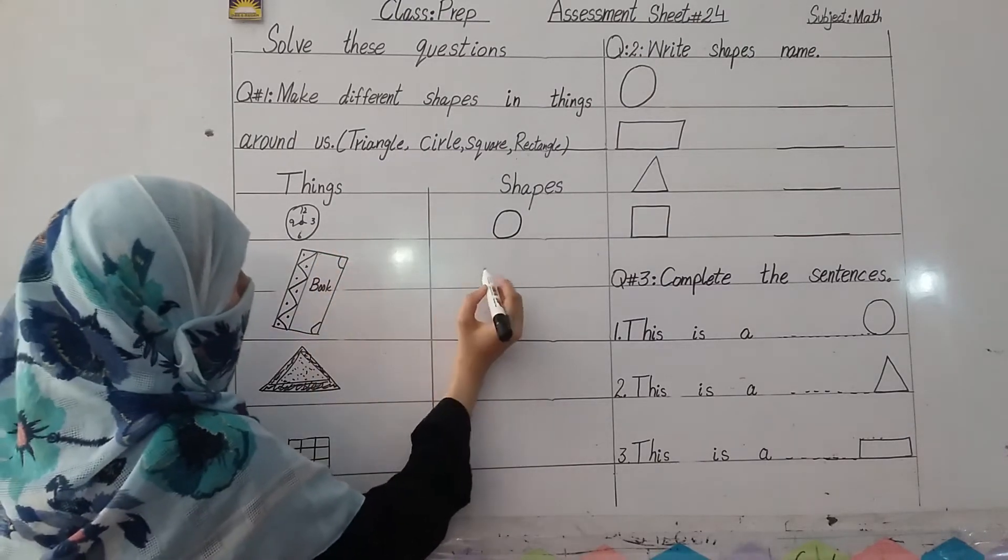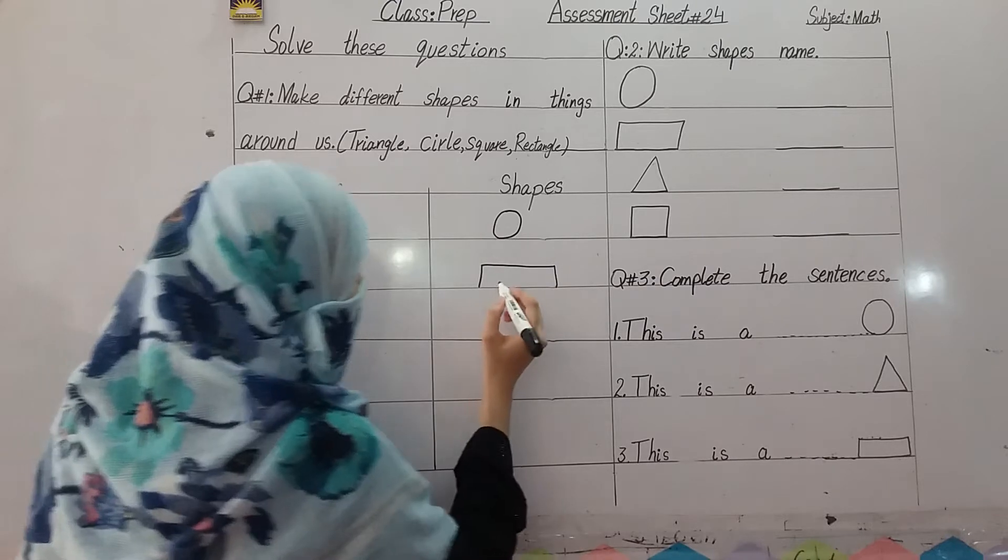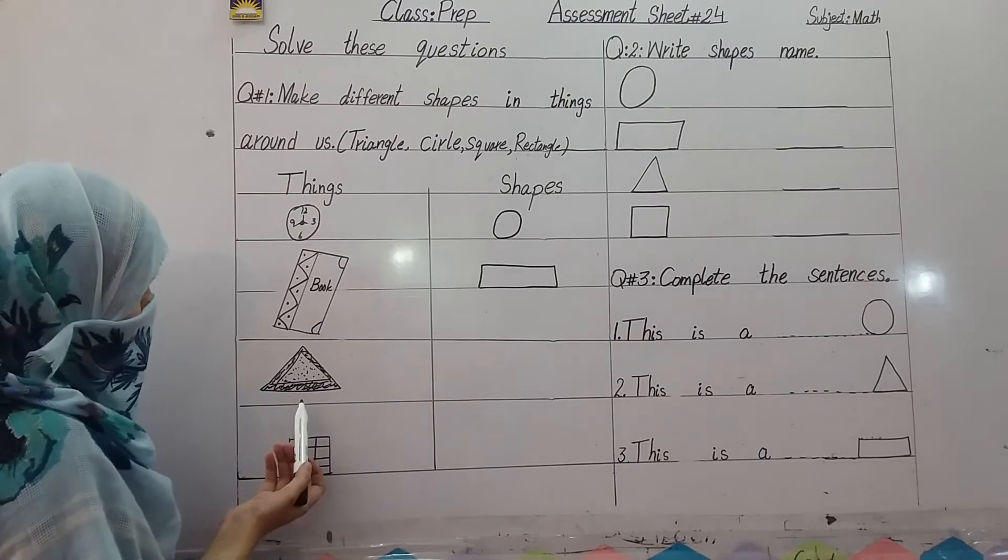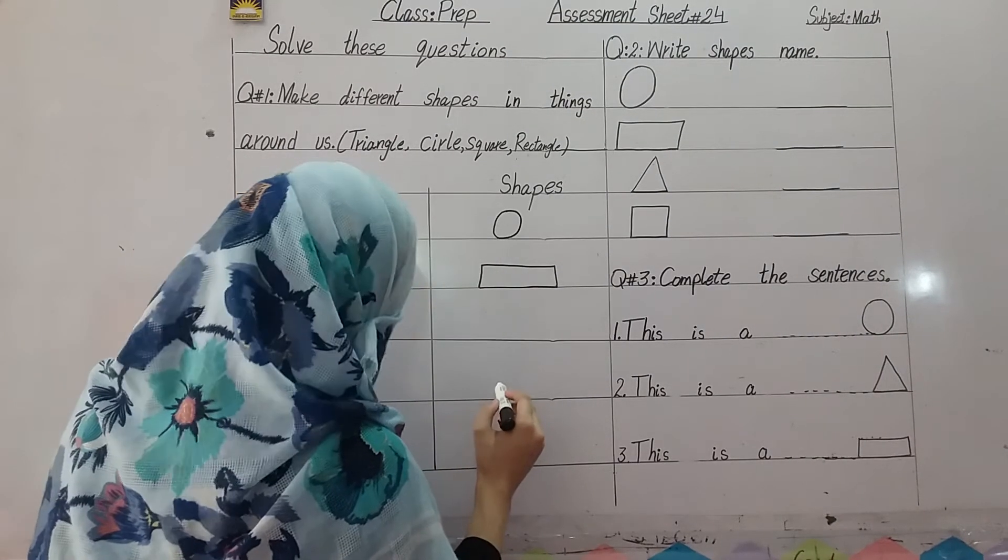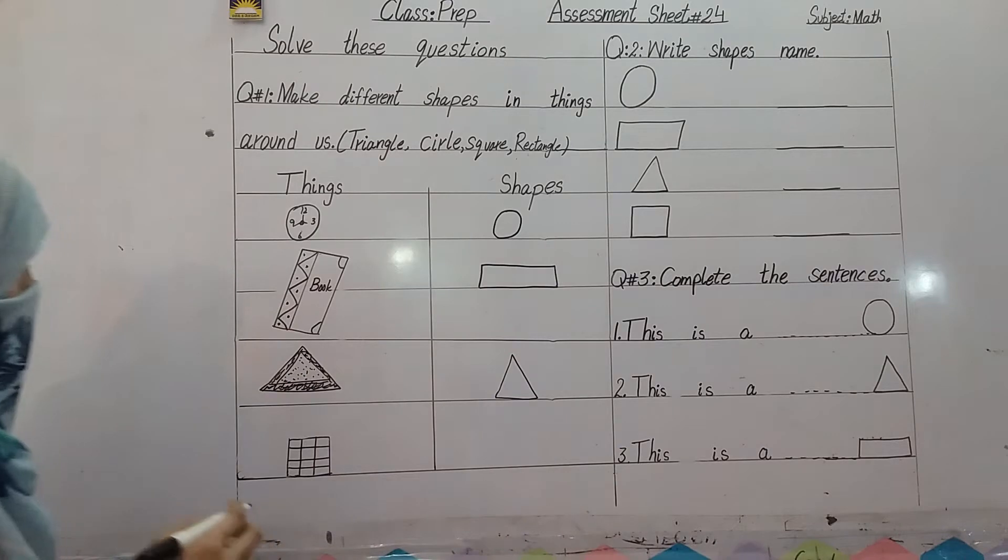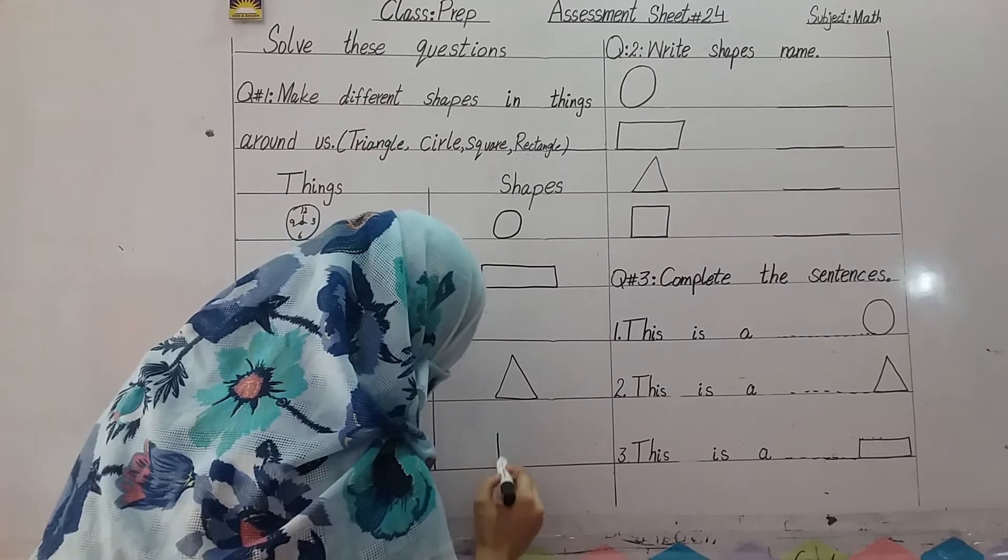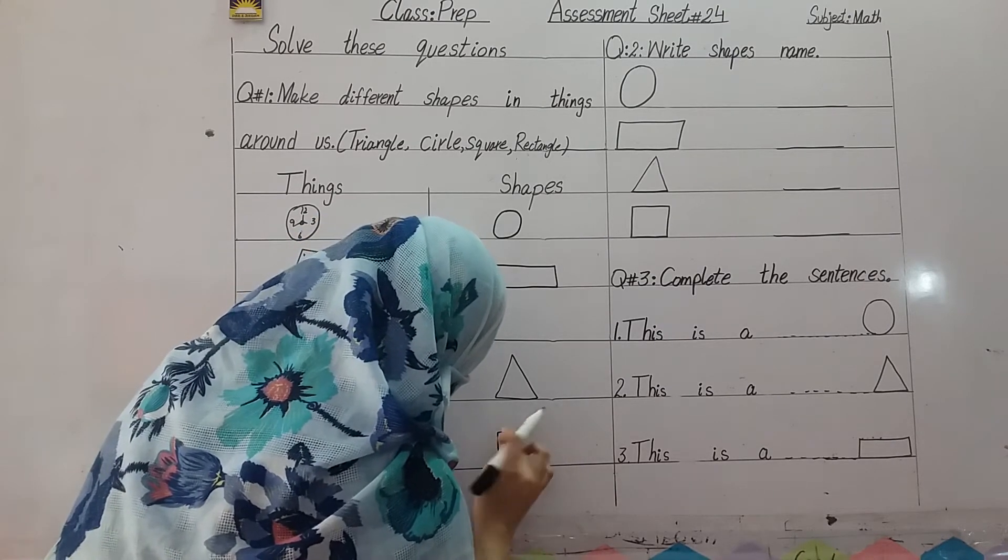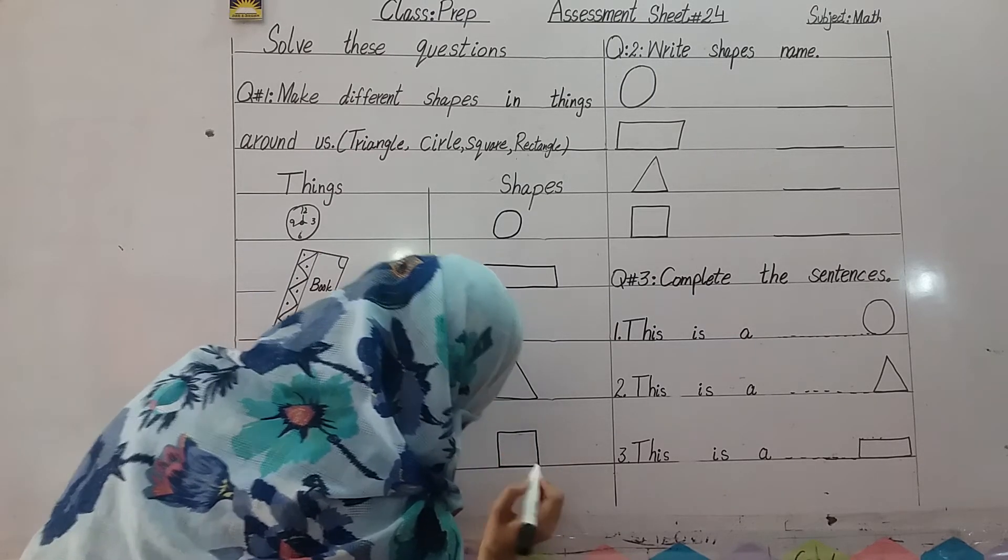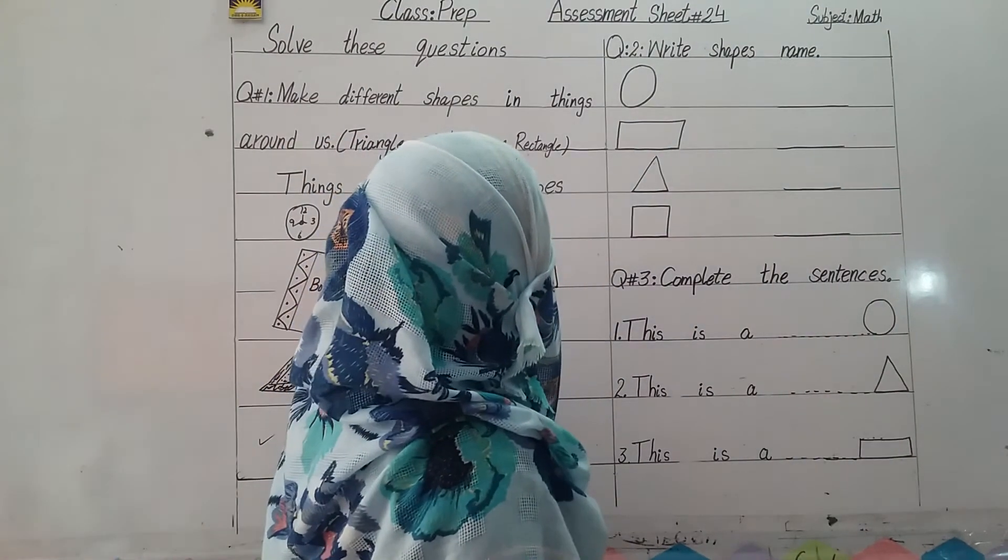This is the shape of the rectangle. I will show you, you will see it here. Next is that this is a sandwich, so this is the shape of the rectangle. So you can draw it here. Okay, let's move to another question. Question number two. Write shape name.